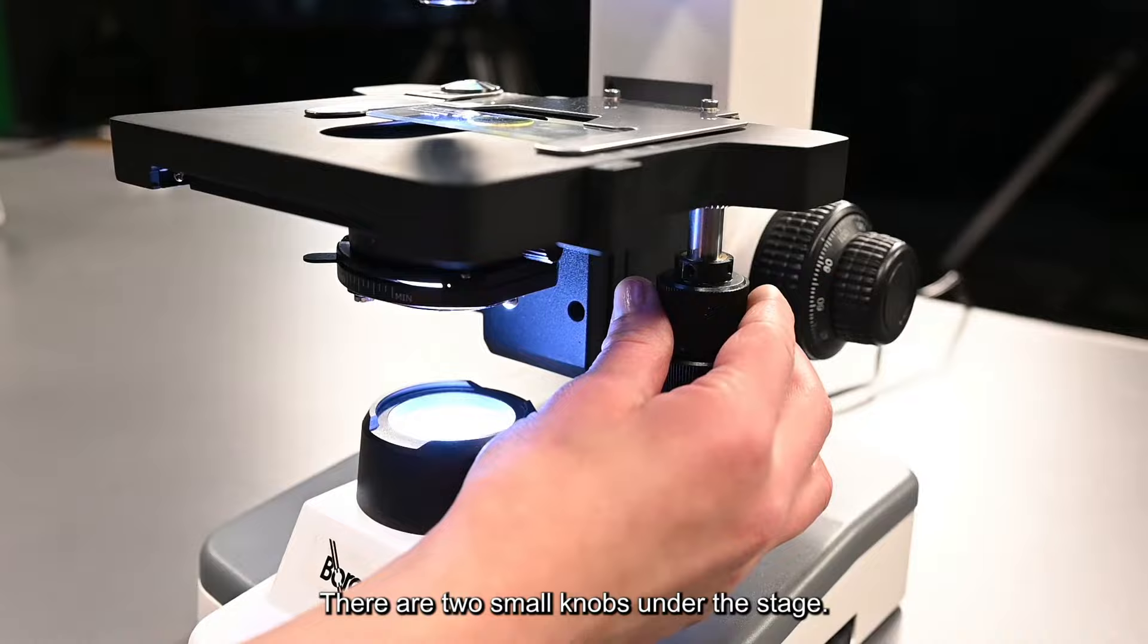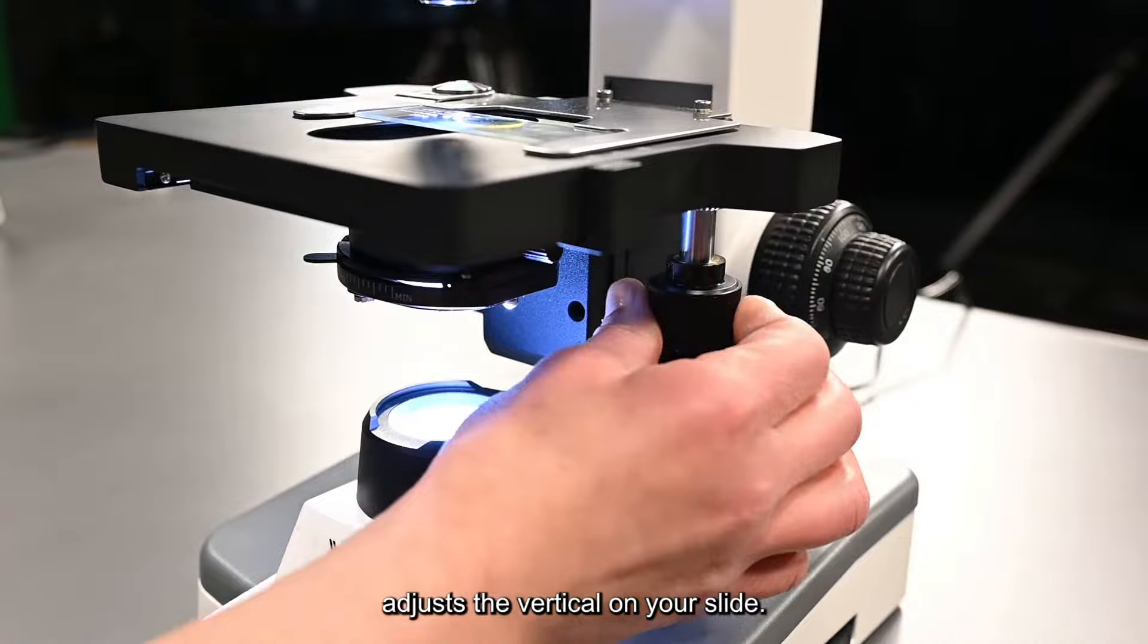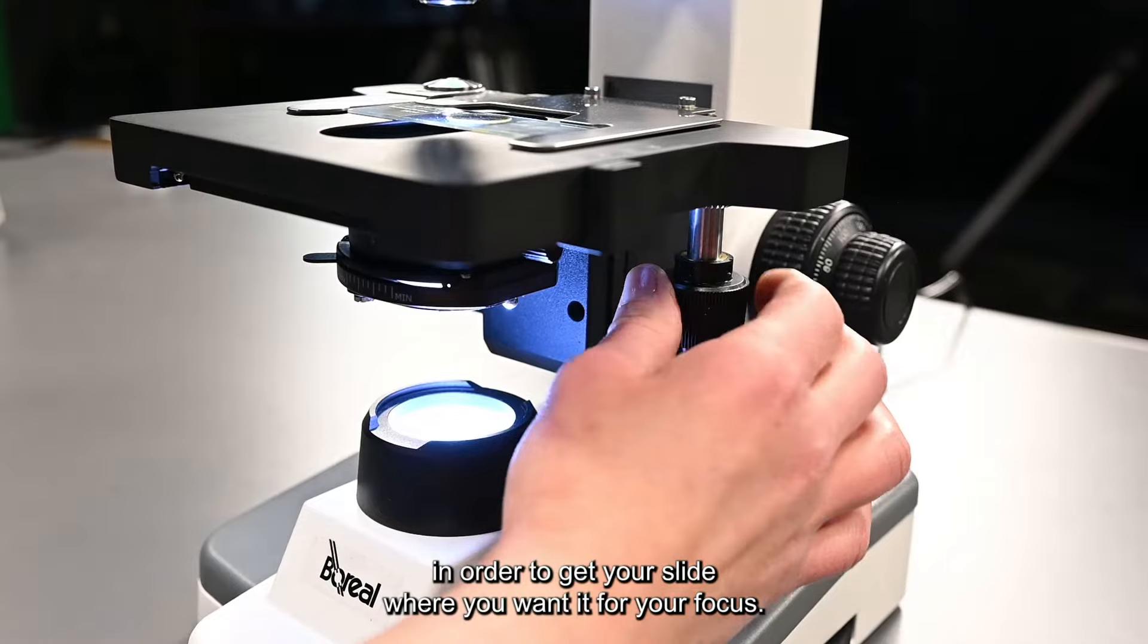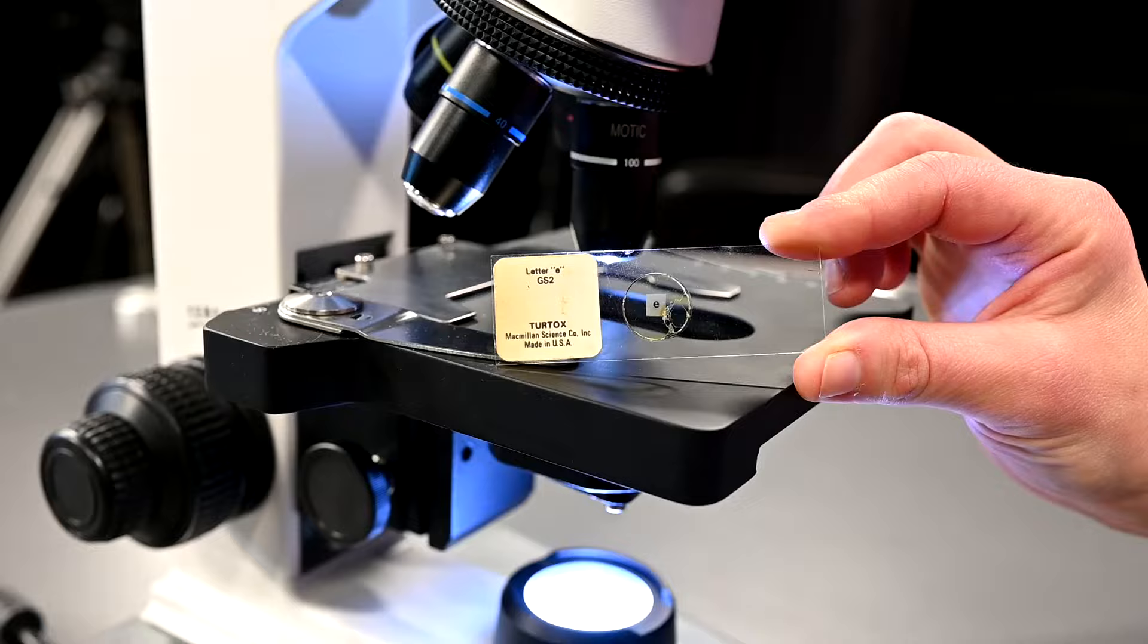There are two small knobs under the stage. The top part if you rotate it adjusts the vertical on your slide. The bottom one if you twist it adjusts the horizontal on your slide in order to get your slide where you want it or your focus.